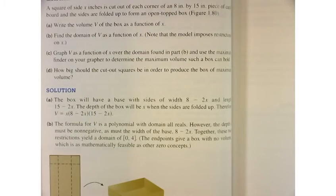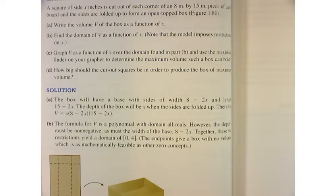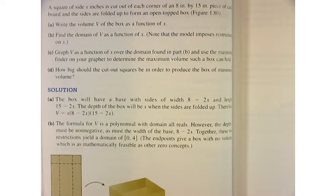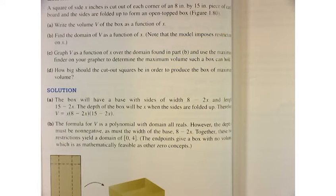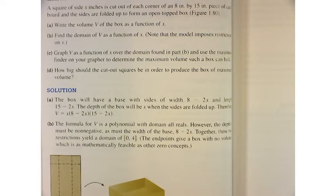So the first thing they want us to do is write a function of the volume of the box as a function of x, find the domain for the volume function. Part c, graph v as a function of x over the domain. And then part d, how big do the cutouts need to be in order to produce the box of maximum volume?